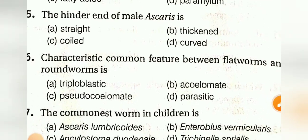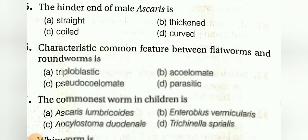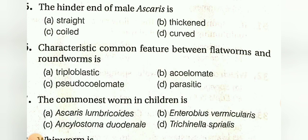Common feature between flatworm and roundworm is: triploblastic, acoelomate, pseudocoelomate, or parasitic. The answer is A, triploblastic.